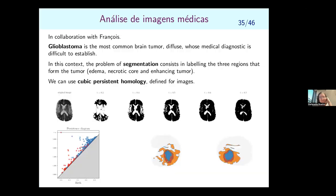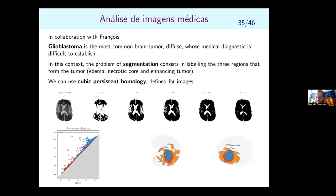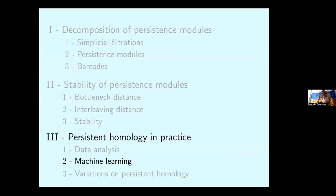This approach could connect to neuroscience work on brain activation under stress: some regions become more intense, and persistent homology could help characterize whether the same regions are activated or how they vary.